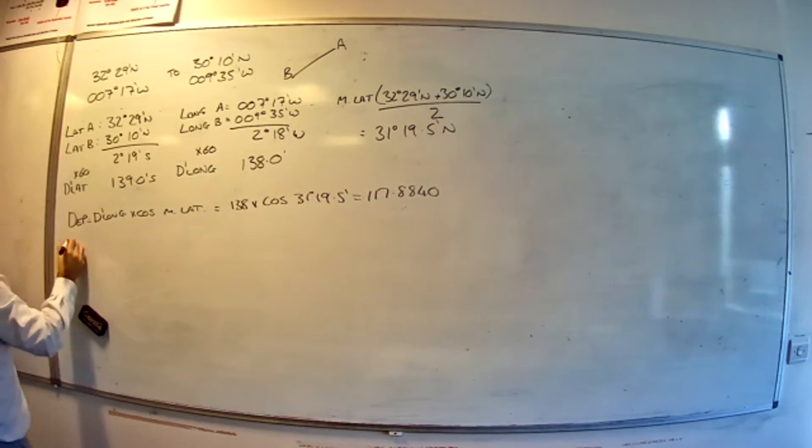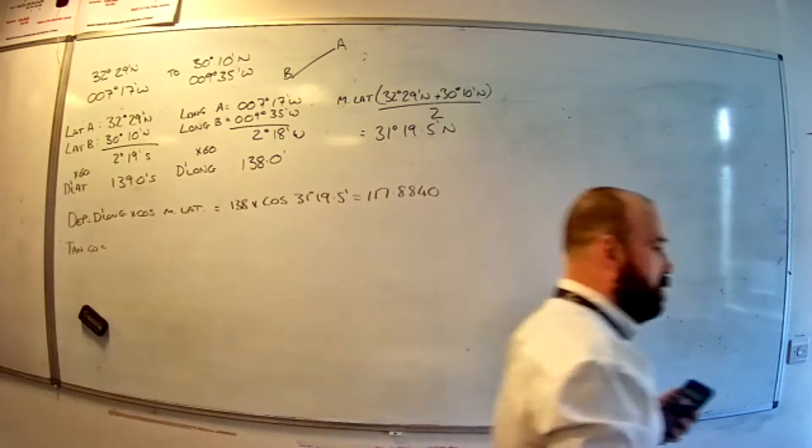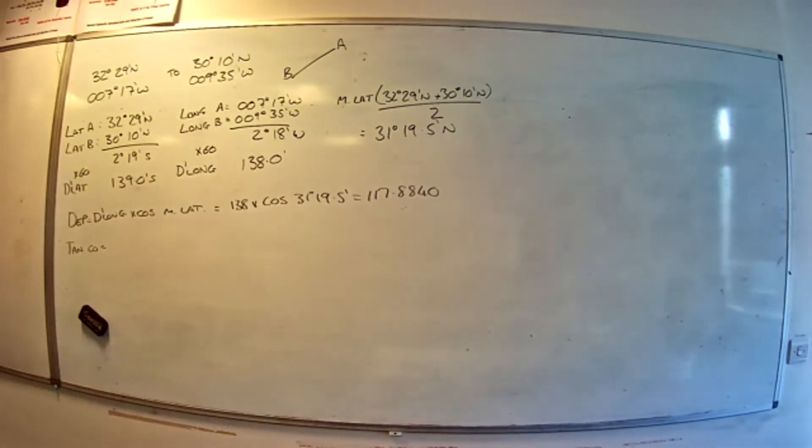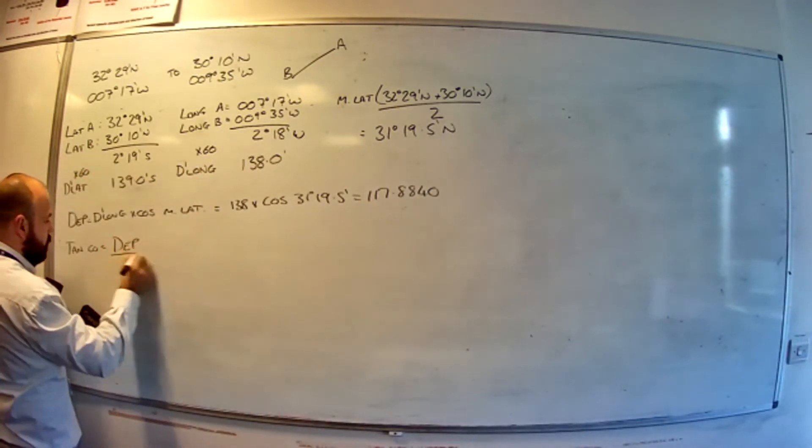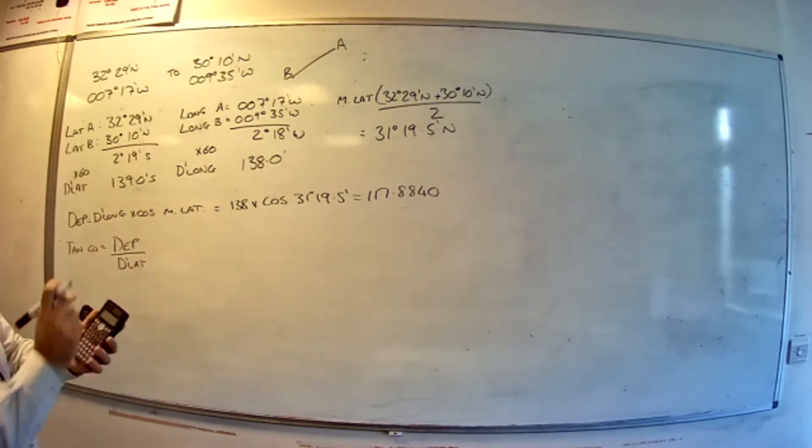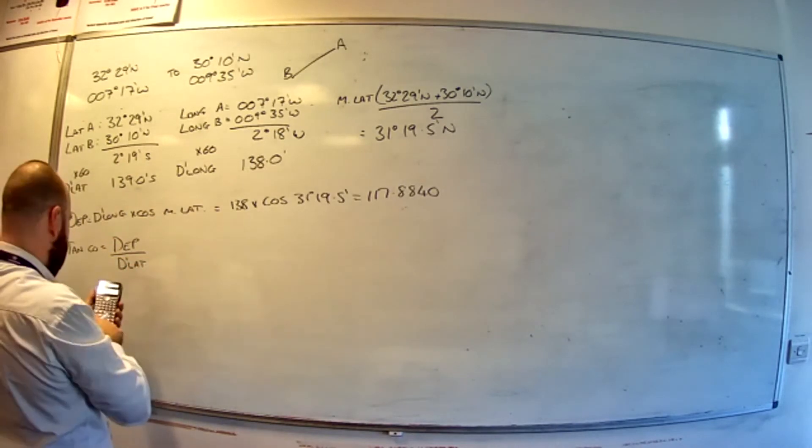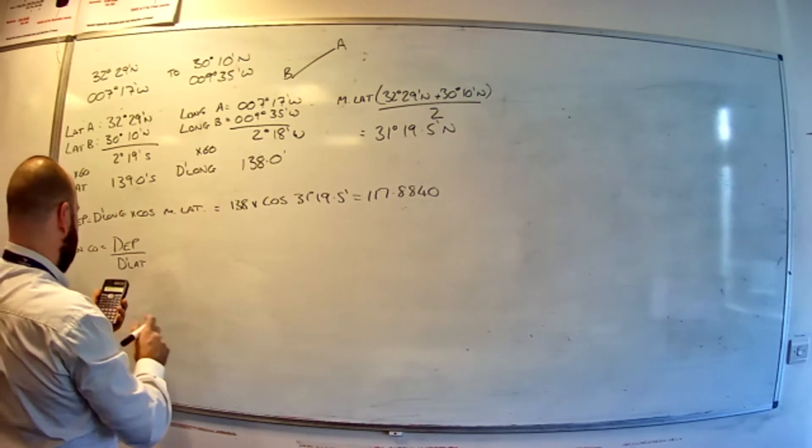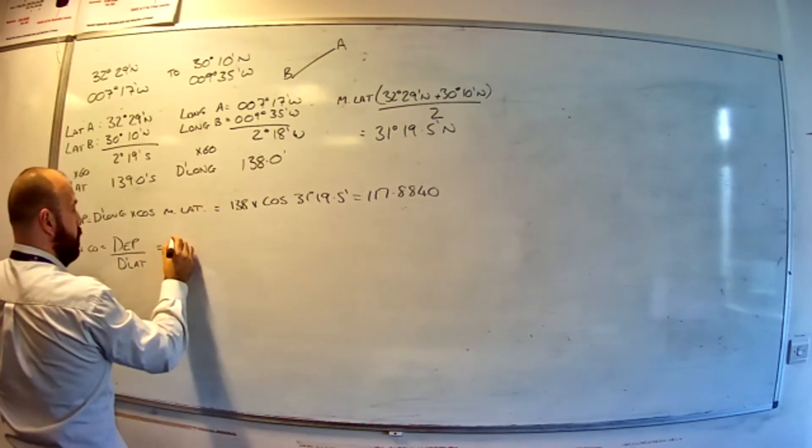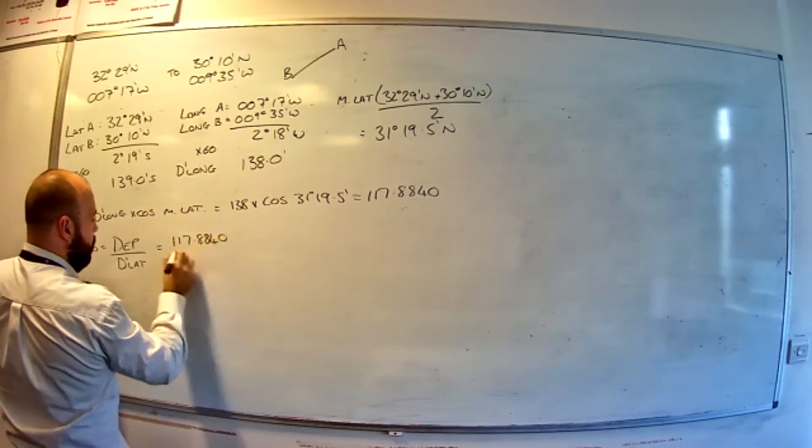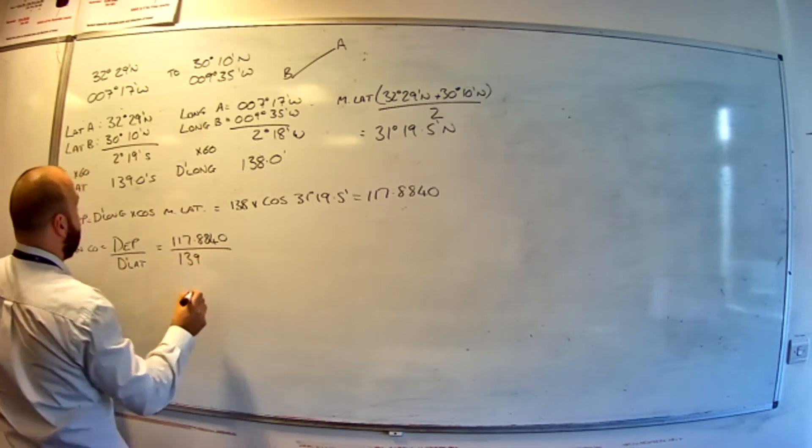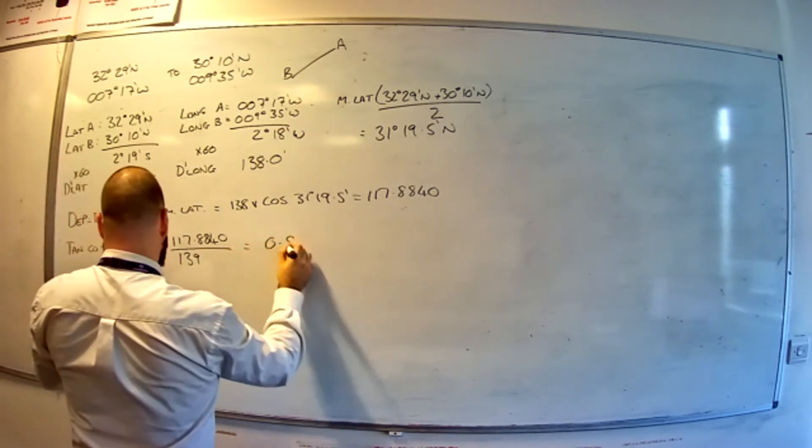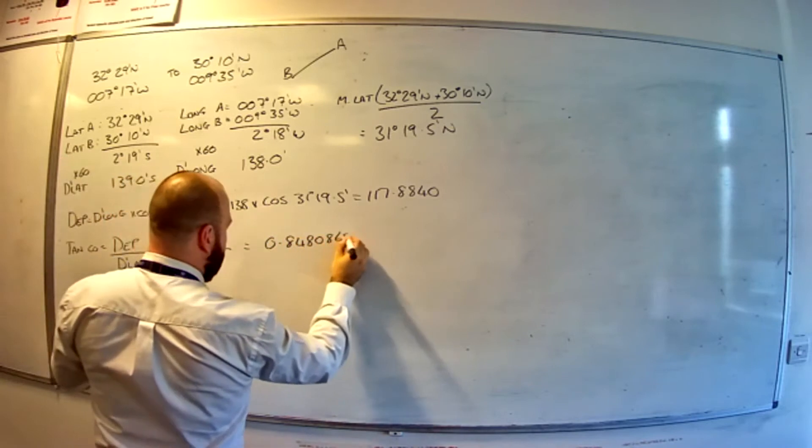Now what I can do is say, okay, tan course. And for this, I'm going to use the plane sailing tan course. Make sure you don't use the DLong over DMP one. Tan course is departure, which I've just got, divided by DLat. So now what I like to do is press answer divided by DLat 139. That's handy isn't it? Equals 0.848086511. Keep the whole number on.